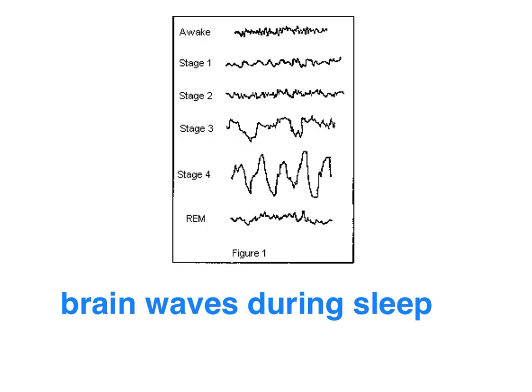There are three key aspects of EEG readings during sleep. During REM sleep, the EEG patterns are very similar to a waking state — we have beta-like, sawtooth-like brain waves indicating a high level of electrical activity in the brain caused by dreams.